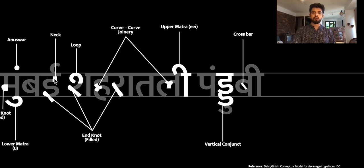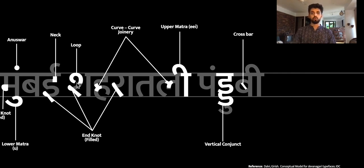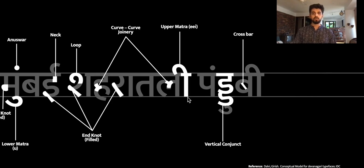There is a neck which joins the letter to the shiro rekha at the top. There is also a loop — it is a loop and not a knot because the loop is where the letter starts and is usually open and not completely enclosed. A knot is morphologically completely tied up, whereas a loop is just folded. Then there are curve-to-curve joiners which are very common in Devanagari. There is another type of ending knot, another curve-to-curve joinery, an upper matra, and a stem which is for the consonant e — the deeper e.